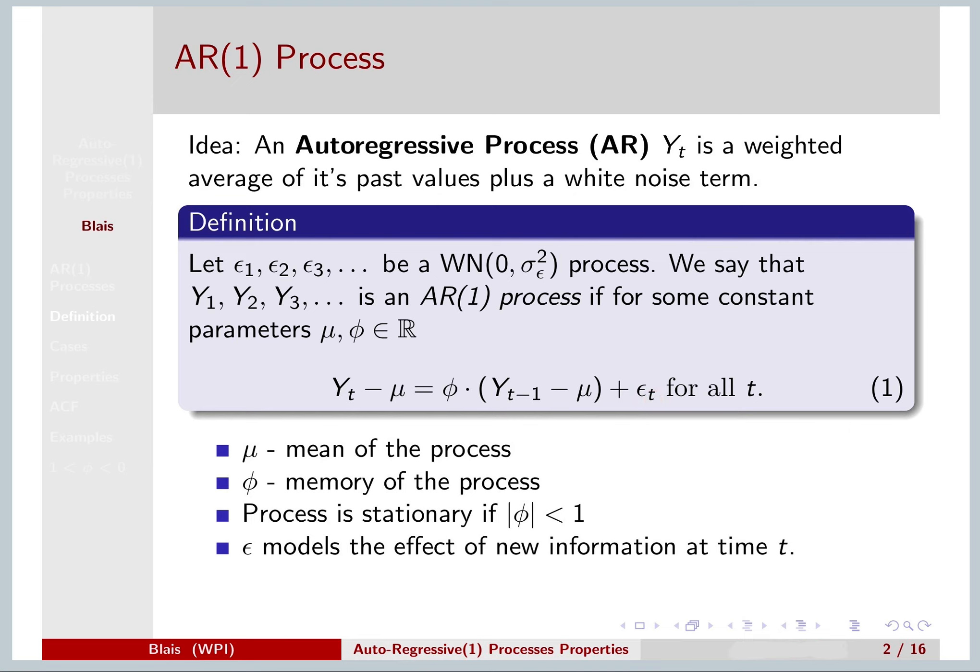Mu is the mean of the process, phi is the memory, and the process is stationary if the absolute value of phi is less than 1.